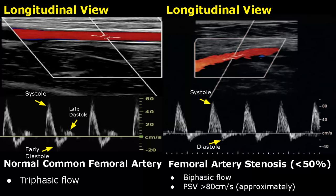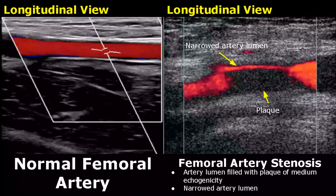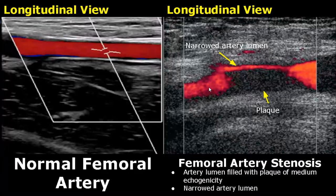In this image, power Doppler is applied. We can see the lumen of the artery is filled with a plaque of medium echogenicity, and the lumen of the artery is narrowed.